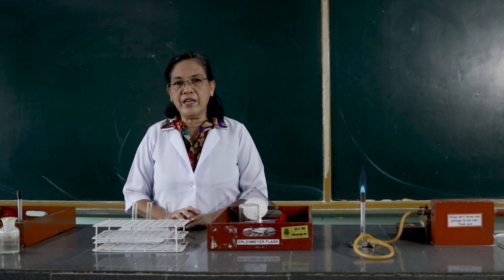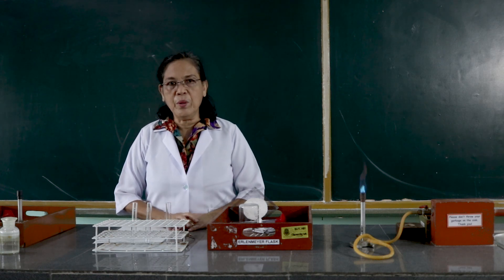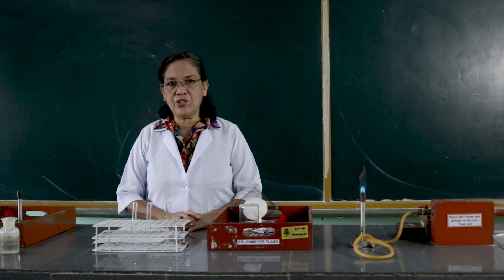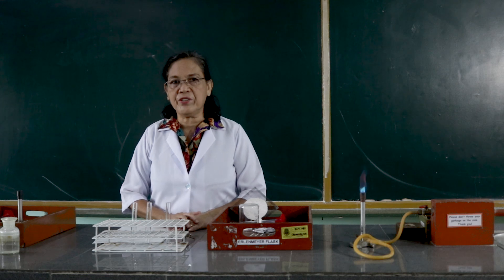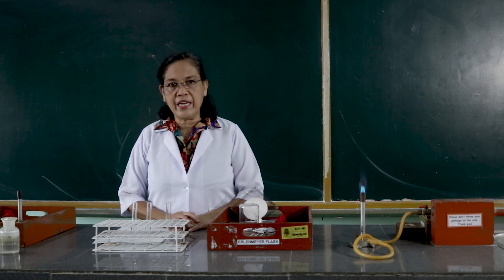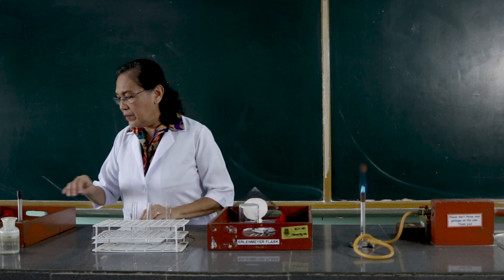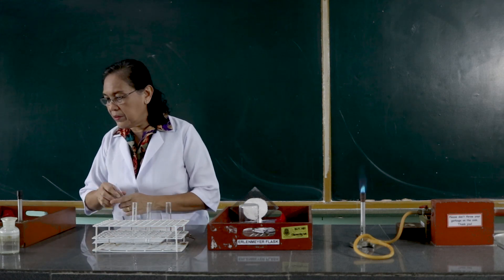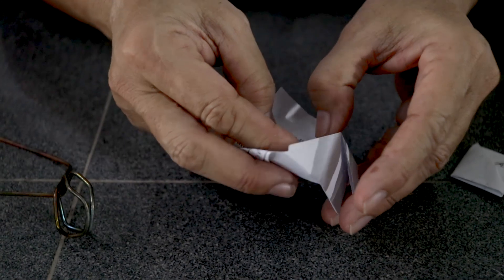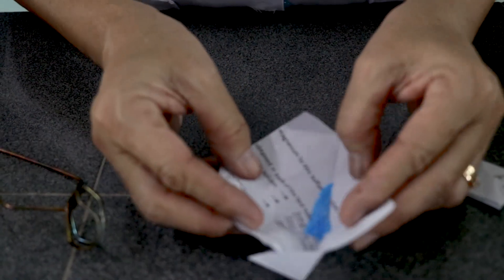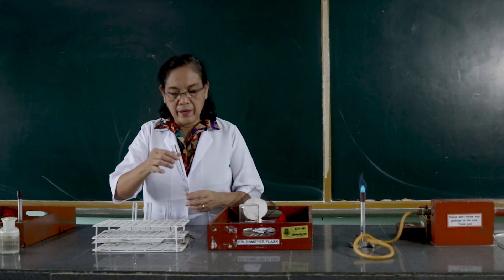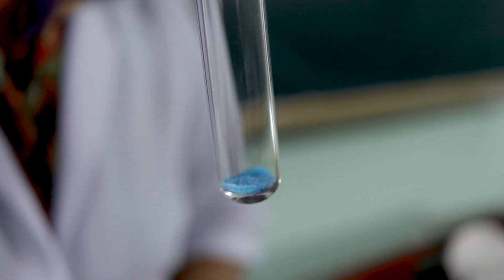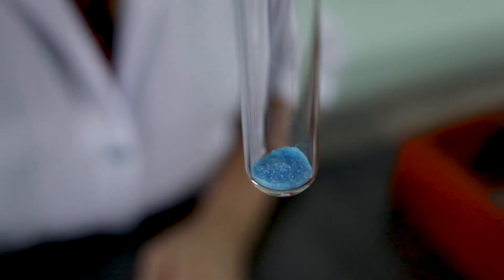In this experiment, we are asked to heat a blue vitriol in a test tube. I would like you to observe what will happen to the blue vitriol after it is being heated. This is the blue vitriol, chemically known as copper sulfate pentahydrate.